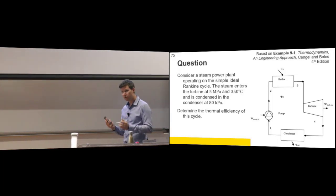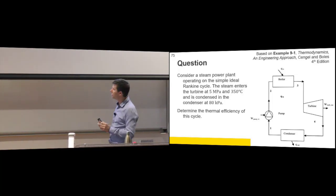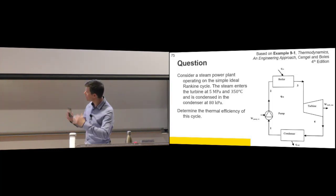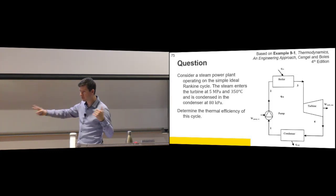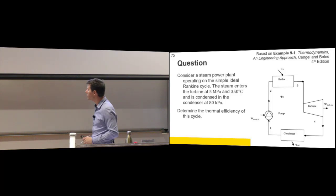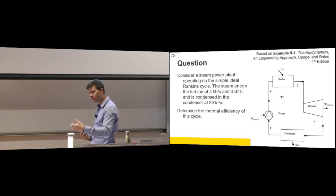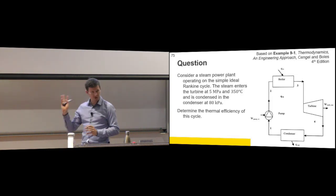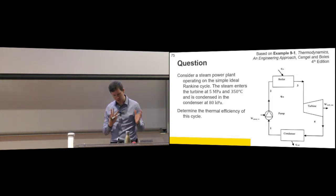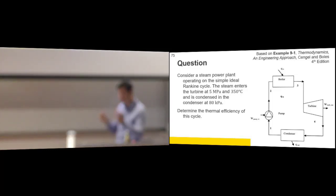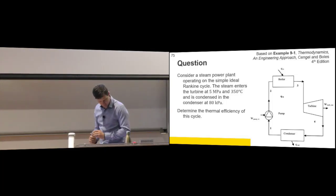There's four processes, and similar to a Brayton cycle, these are processes that are spatially different, so they're not done like the Otto cycle in the same cylinder. They're separated by space and they're all continually happening. So they're all steady state, steady flow, open processes. In the very simplest case, each of them has one inlet and one outlet. That's certainly not true when we get to more complicated Rankine cycles, but we start with the basic.